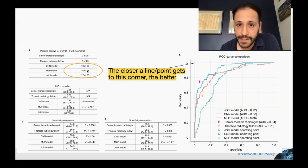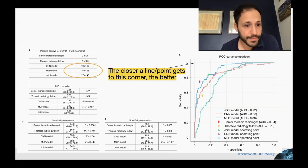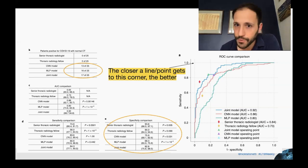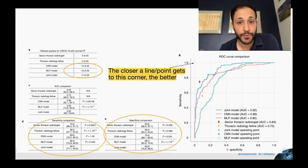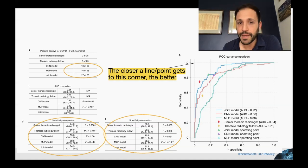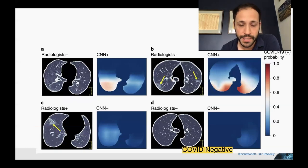They had 25 of these missed patients and were able to recover about half of them. They compared their performance directly to experts and found that for specificity, their algorithm did not perform as well as the experts, but in sensitivity it performed better. That means we could use this algorithm to supplement current processes and capture some of those otherwise false negatives — I think that's the strongest use here.